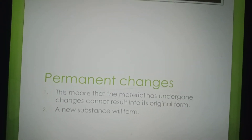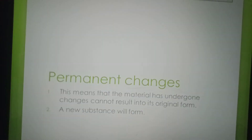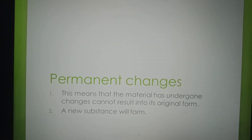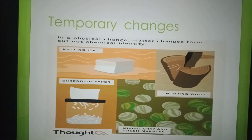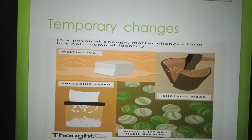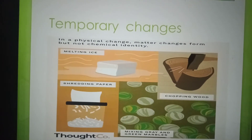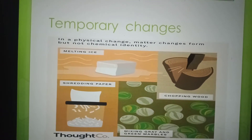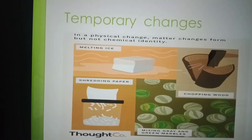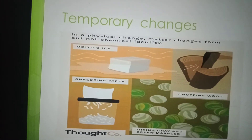Permanent changes means that the material has undergone changes that cannot result in its original form, and a new substance will form. Temporary changes — in a physical change, matter changes its state but not its chemical identity. Examples include melting ice, shredding paper, chopping wood, and mixing grey and green marbles.